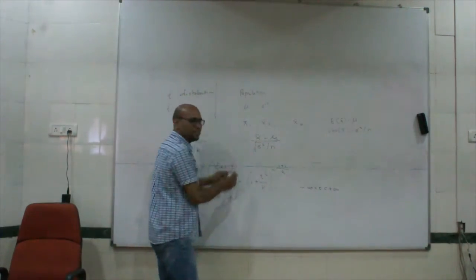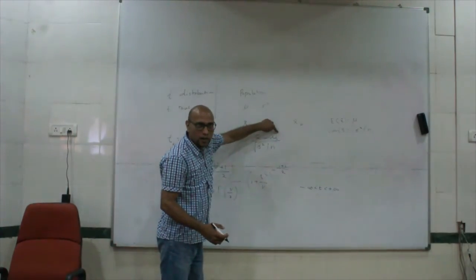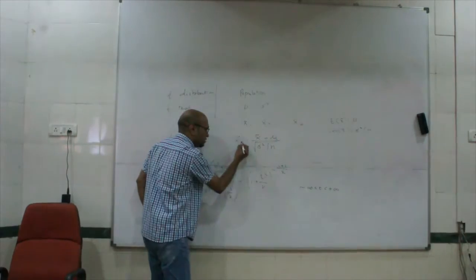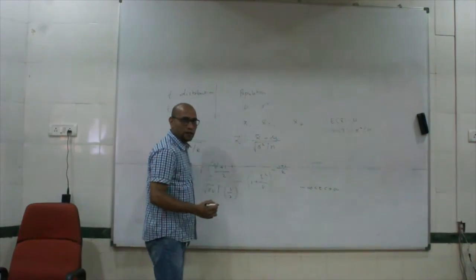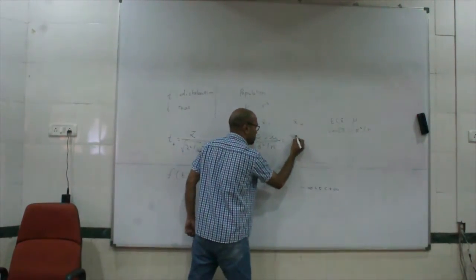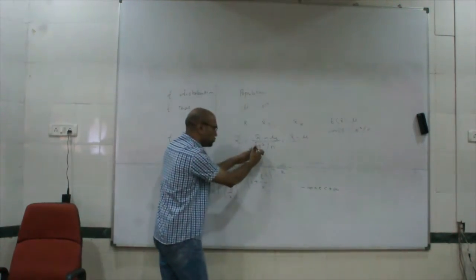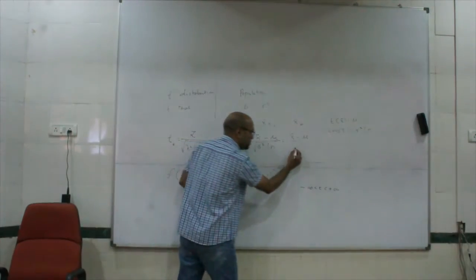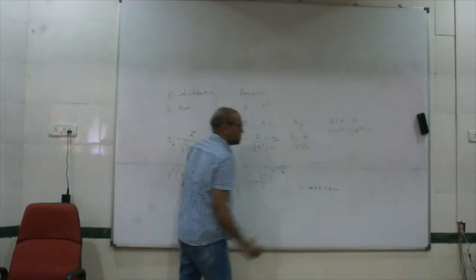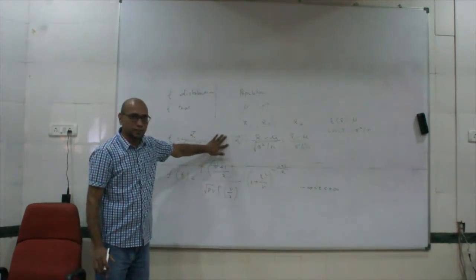So I rewrite it as: x-bar minus mu, upon sigma upon square root of n — this is z. So to compute z this way, for the sampling distribution of the mean, I need knowledge of sigma.